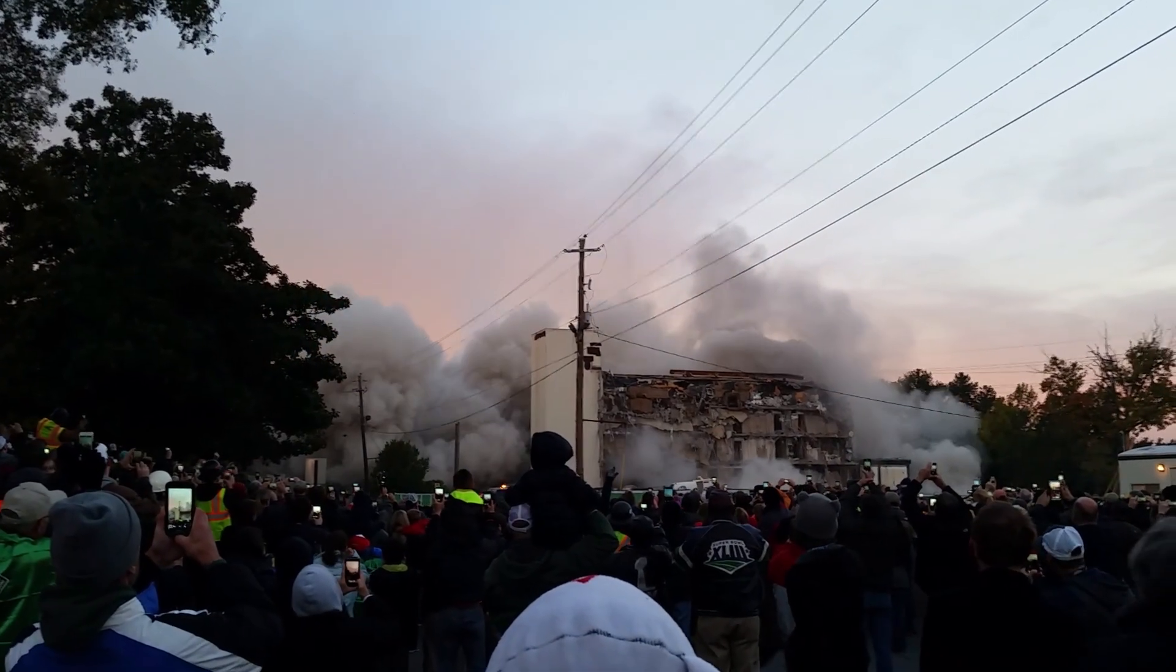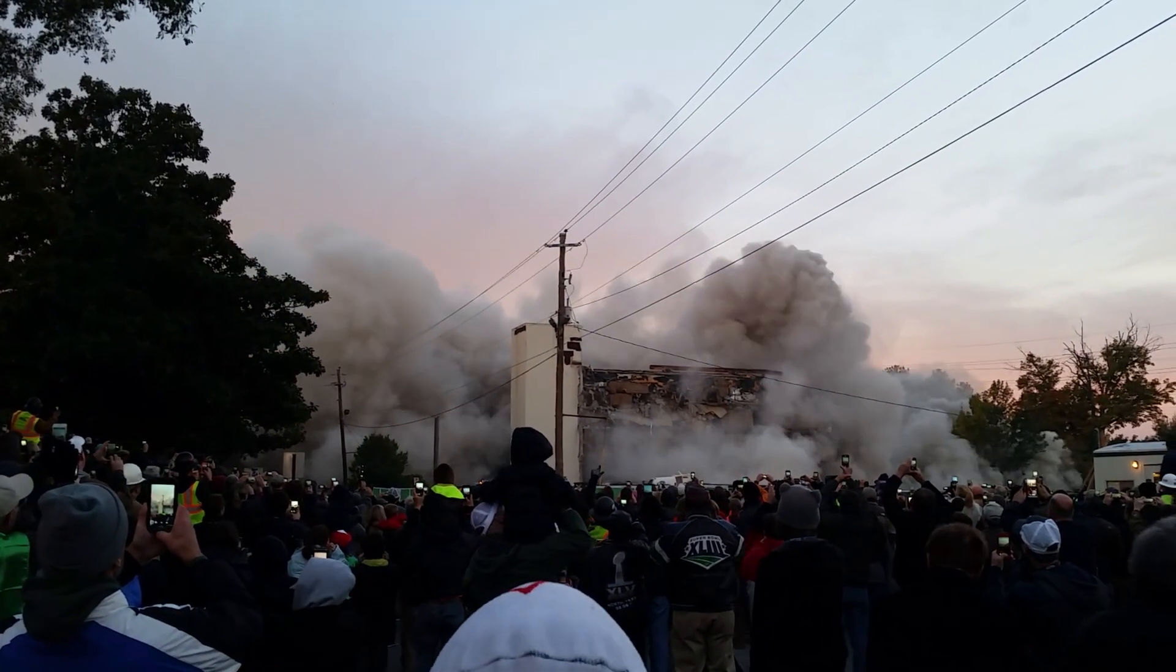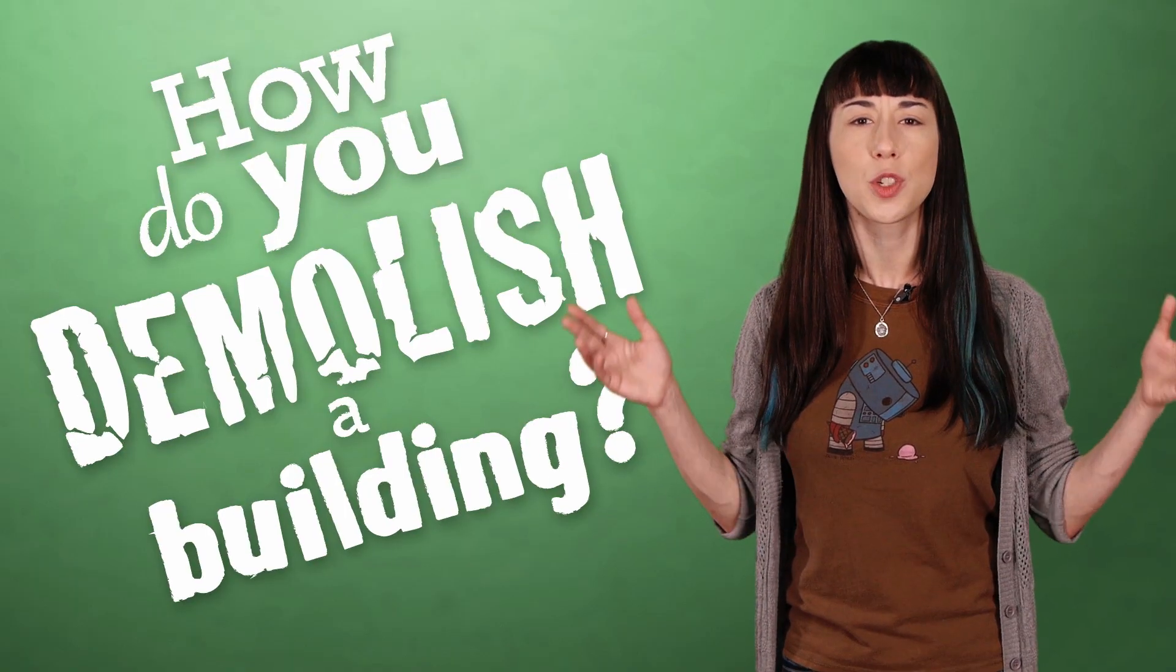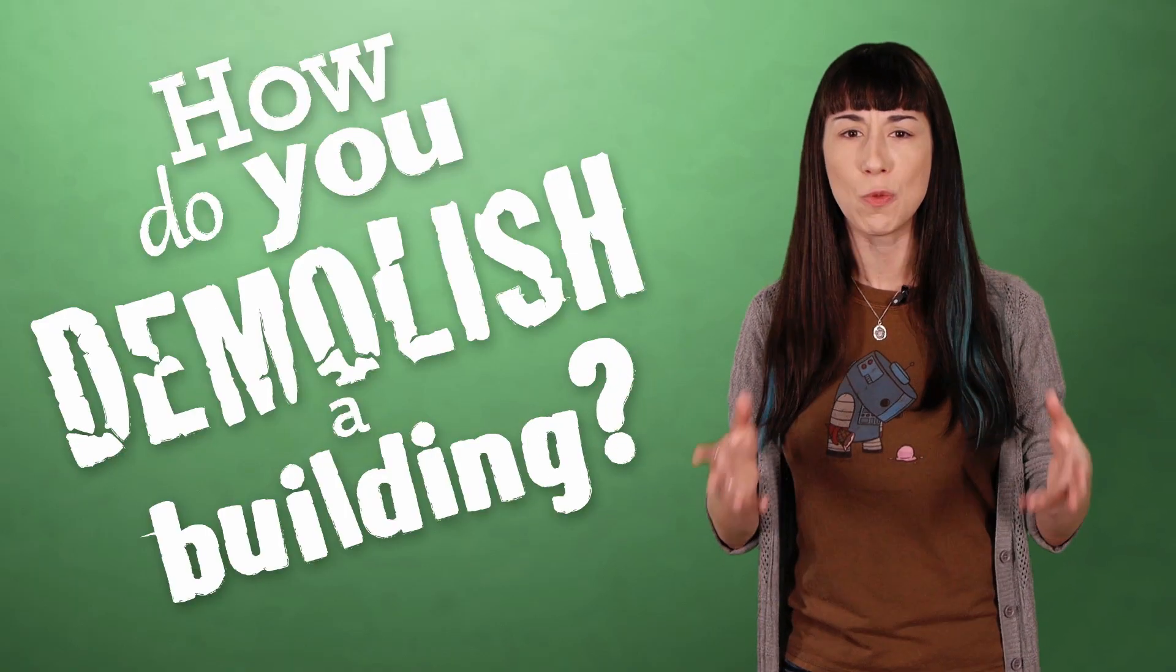Have you seen a demolition company blow up a skyscraper without affecting any of the other buildings around it? Obviously science and explosives are used to control the collapse, but how exactly do you demolish a building so that it falls inward?